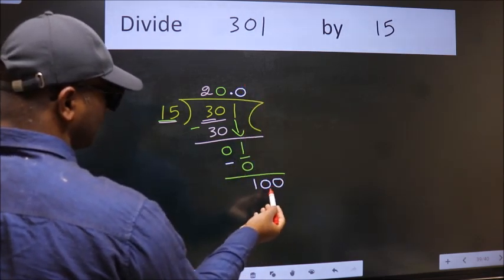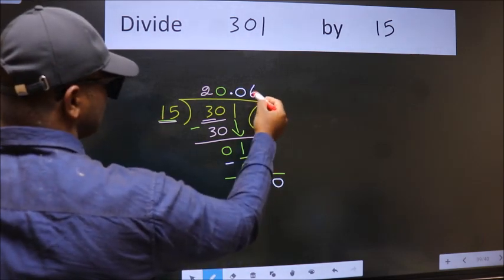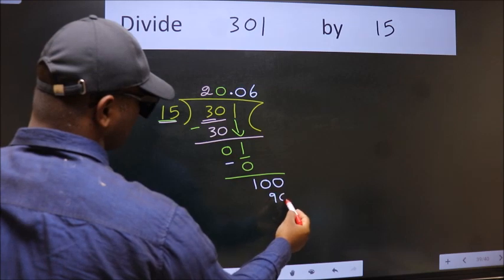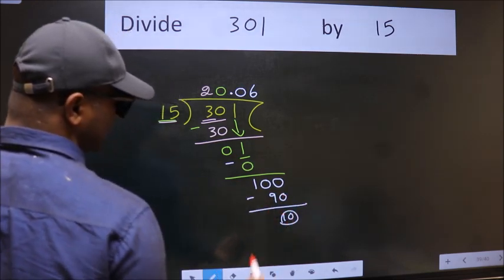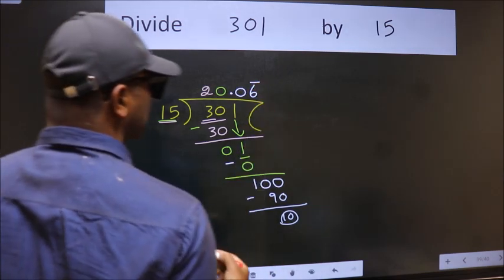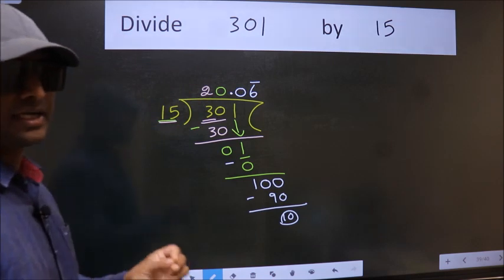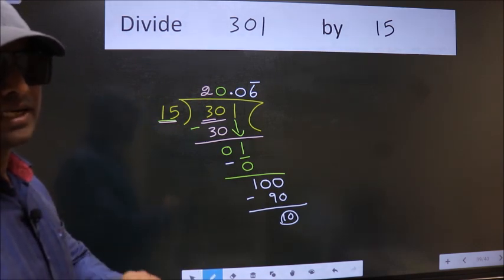So to get 0 here we should put 0 here. So 100. A number close to 100 in the 15 table is 15 times 6, which is 90. Now we subtract. We got 10 again. That means we get a bar on this number. Did you understand where the mistake happens? You should not do that mistake.